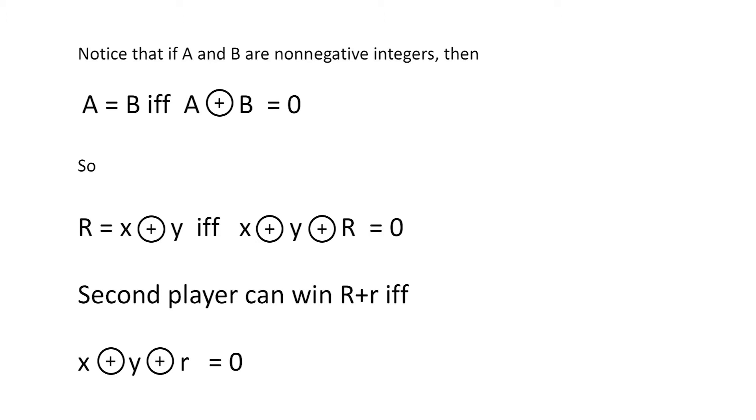So the winning positions in the sum of a baby rook and a grown-up rook are those in which the three relevant coordinates nim sum to zero. In fact, the grown-up rook can be viewed as the sum of two independent baby rooks, one of which matches his row, the other matches his column.